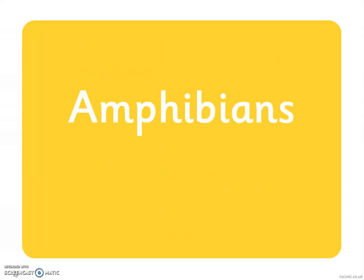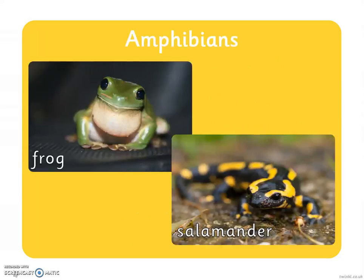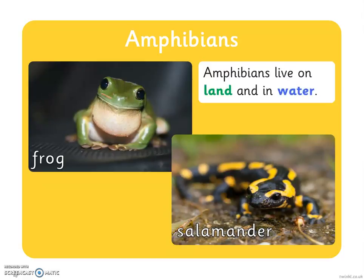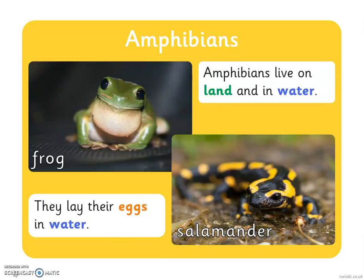The first group is amphibians. Here are some pictures of different amphibians. There is a frog and a salamander. Amphibians live on land and in water and they lay their eggs in water.